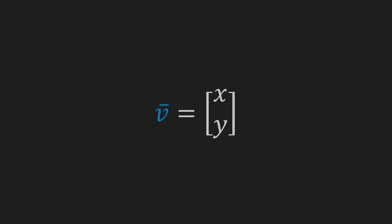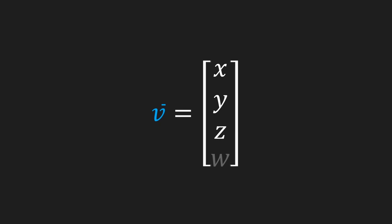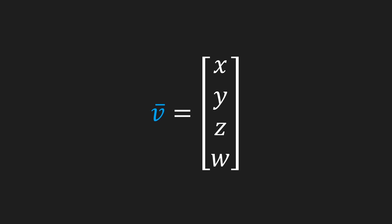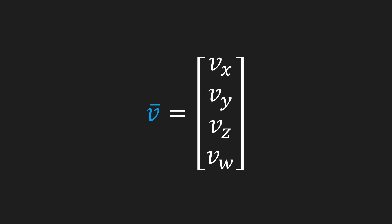Let's quickly have a word about notation. This is a two-dimensional vector — we write the x and y components between the square brackets. For a three-dimensional vector we can add a z component, and we would also add a z-axis which would point outside of the screen. We can expand this vector even further by adding a w component. Now you might be thinking, four-dimensional vectors — wait, what? Well, we'll talk about that in the video about matrices.